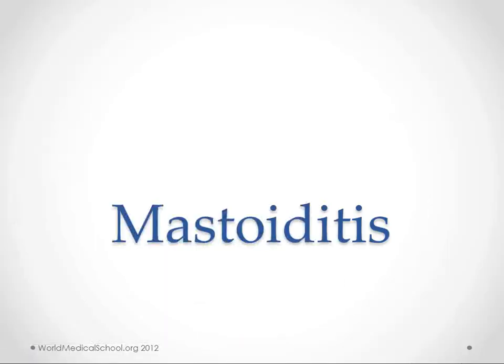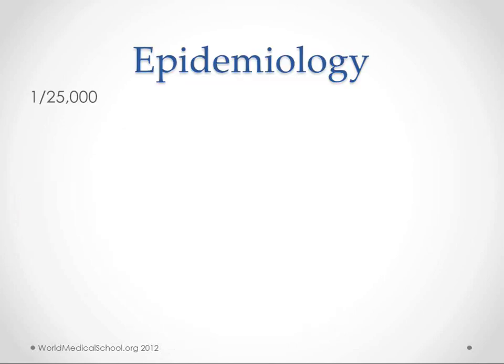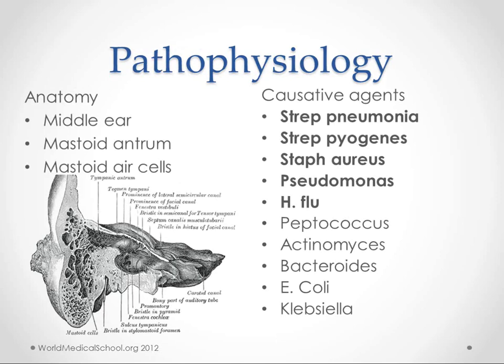Hi, this is Kendrick with worldmedicalschool.org. We're going to talk about mastoiditis. This is a lot less common than I thought it was — about 1 in 25,000 per year incidence rate. It's not showing up quite as much as it used to since the advent of treating acute otitis media with antibiotics. Essentially all mastoiditis comes from a complication of acute otitis media.